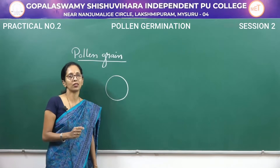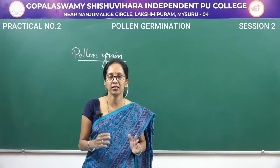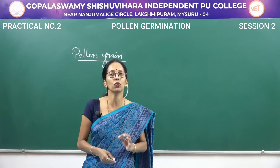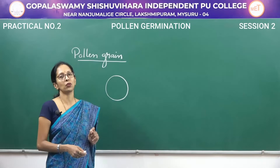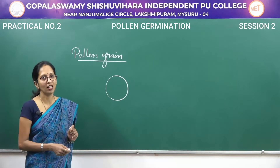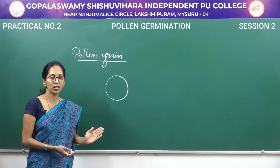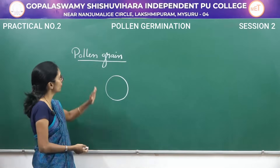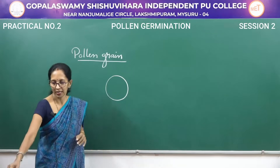Inside the microsporangium there is a presence of uniformly distributed cells. These are said to be sporogenous tissue, and each sporogenous cell acts as a pollen mother cell, so that it undergoes meiotic division and mitotic division, resulting in the formation of structures said to be pollen grains.